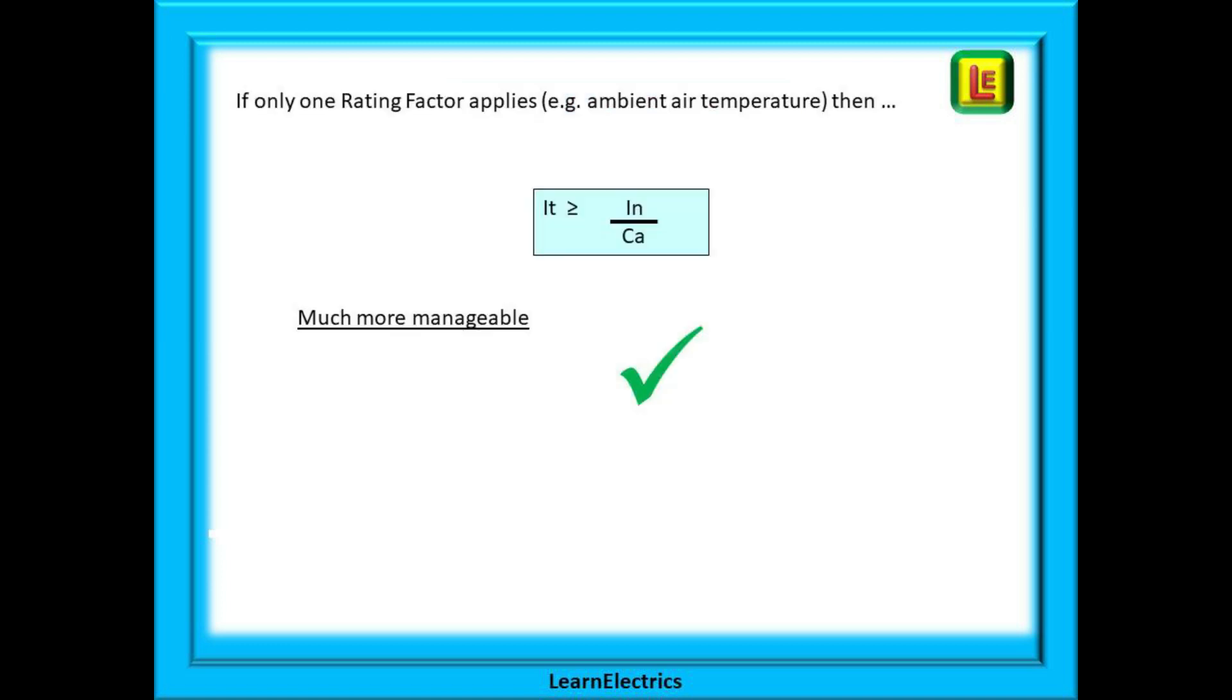It looks scary but worry not. If only one condition applies then the formula looks like this. In this case we have chosen an increased air temperature say in a boiler room or a conservatory in the summer. This is now much more manageable. We only need CA. We don't need all the rest.